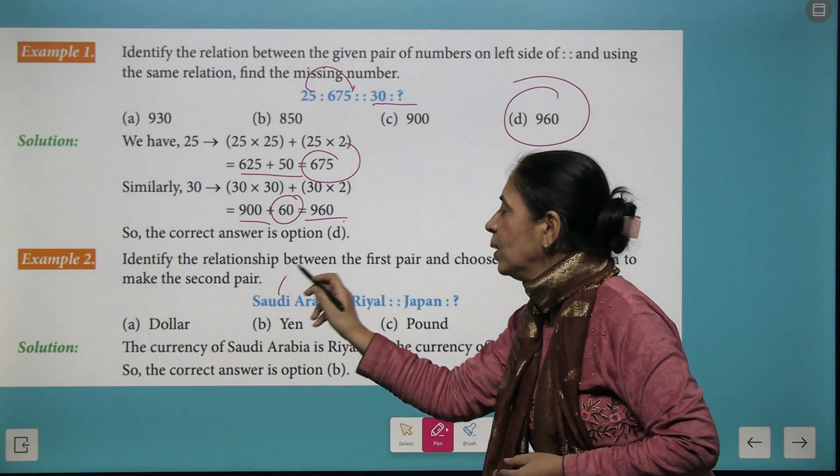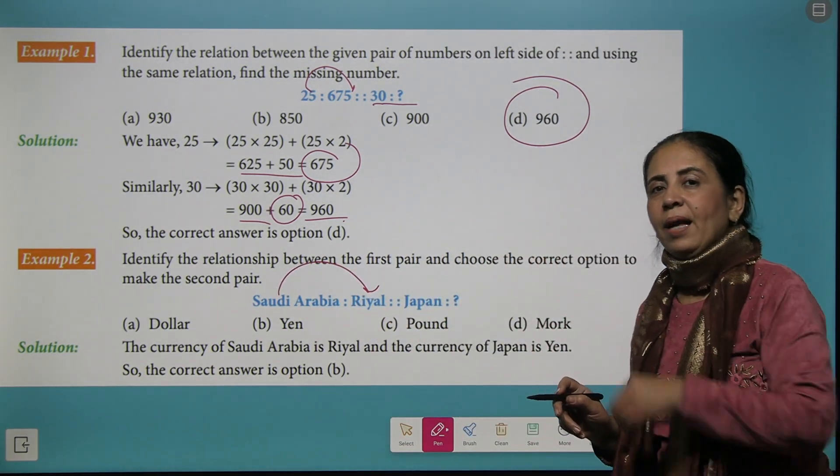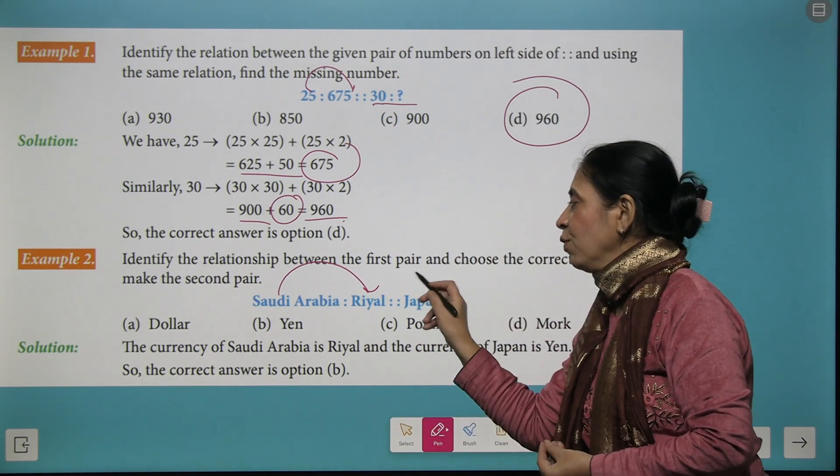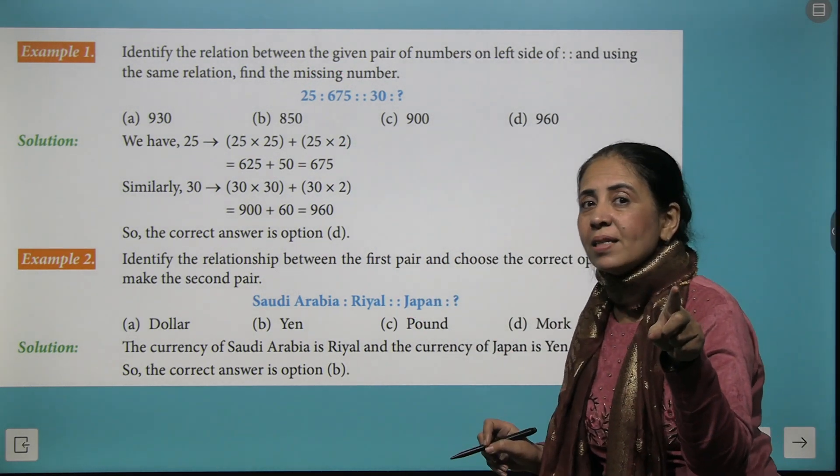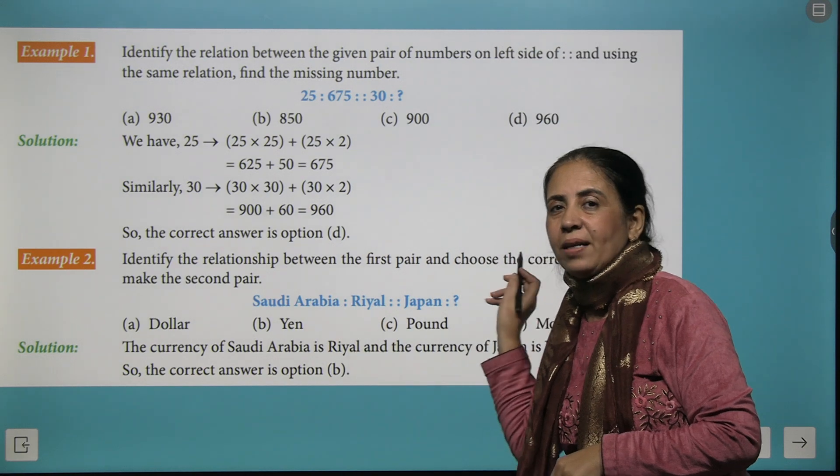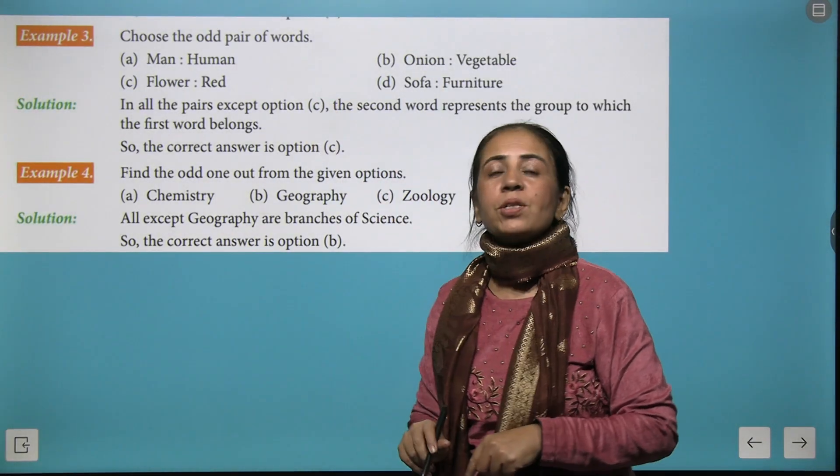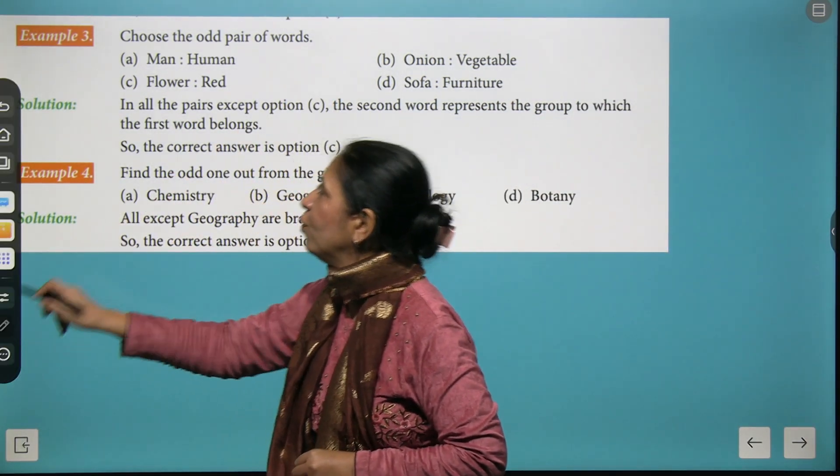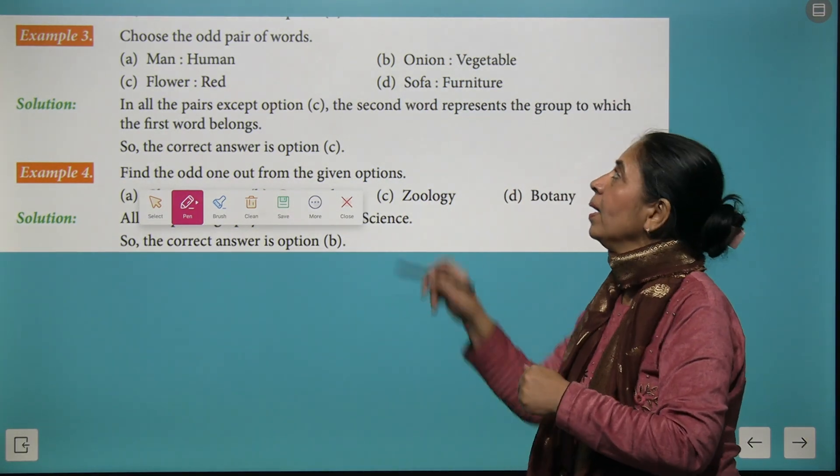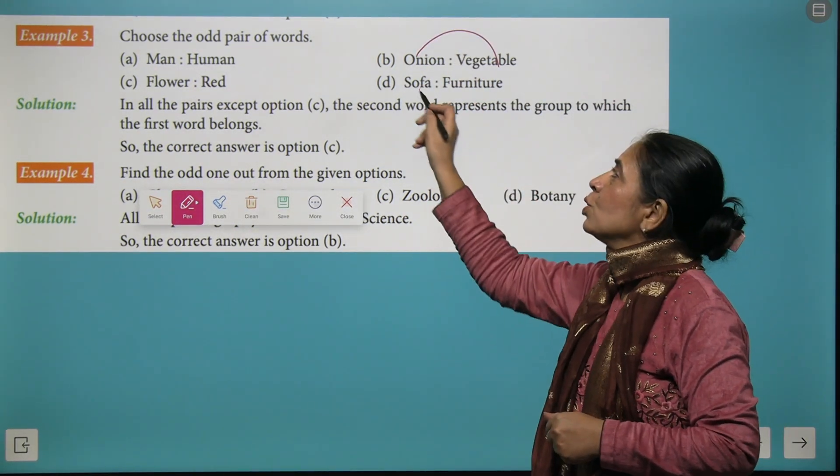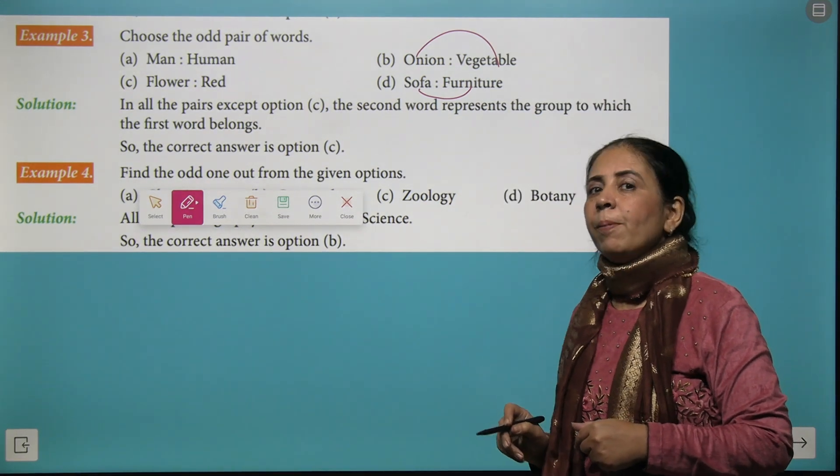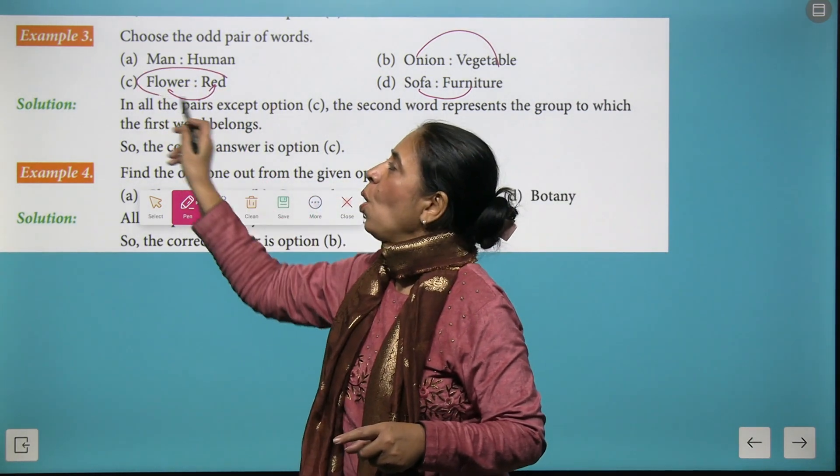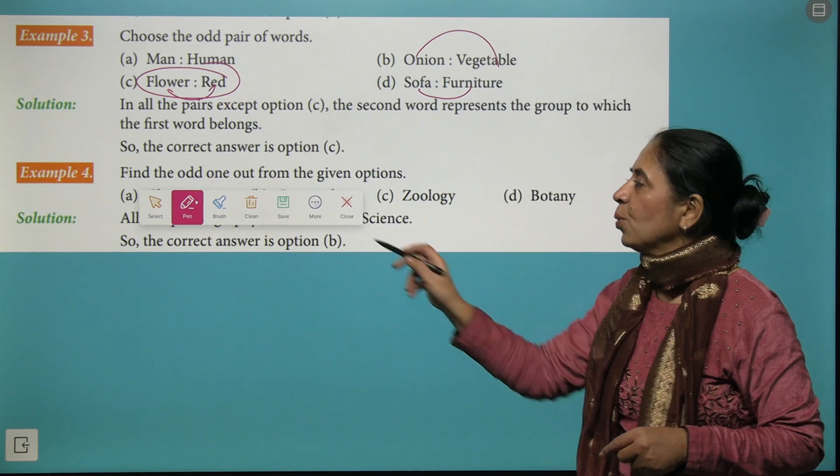Now next is Saudi Arabia is related to real. That means real is the currency of Saudi Arabia. You need to find the currency for Japan and perfectly answered. Yen is the right answer. Now we have next question where you have to choose the odd pair of words. So man is a human being. Onion is a vegetable. Sofa is a furniture. And if I say flower is red that's not always true. So your odd combination is flower is to red.